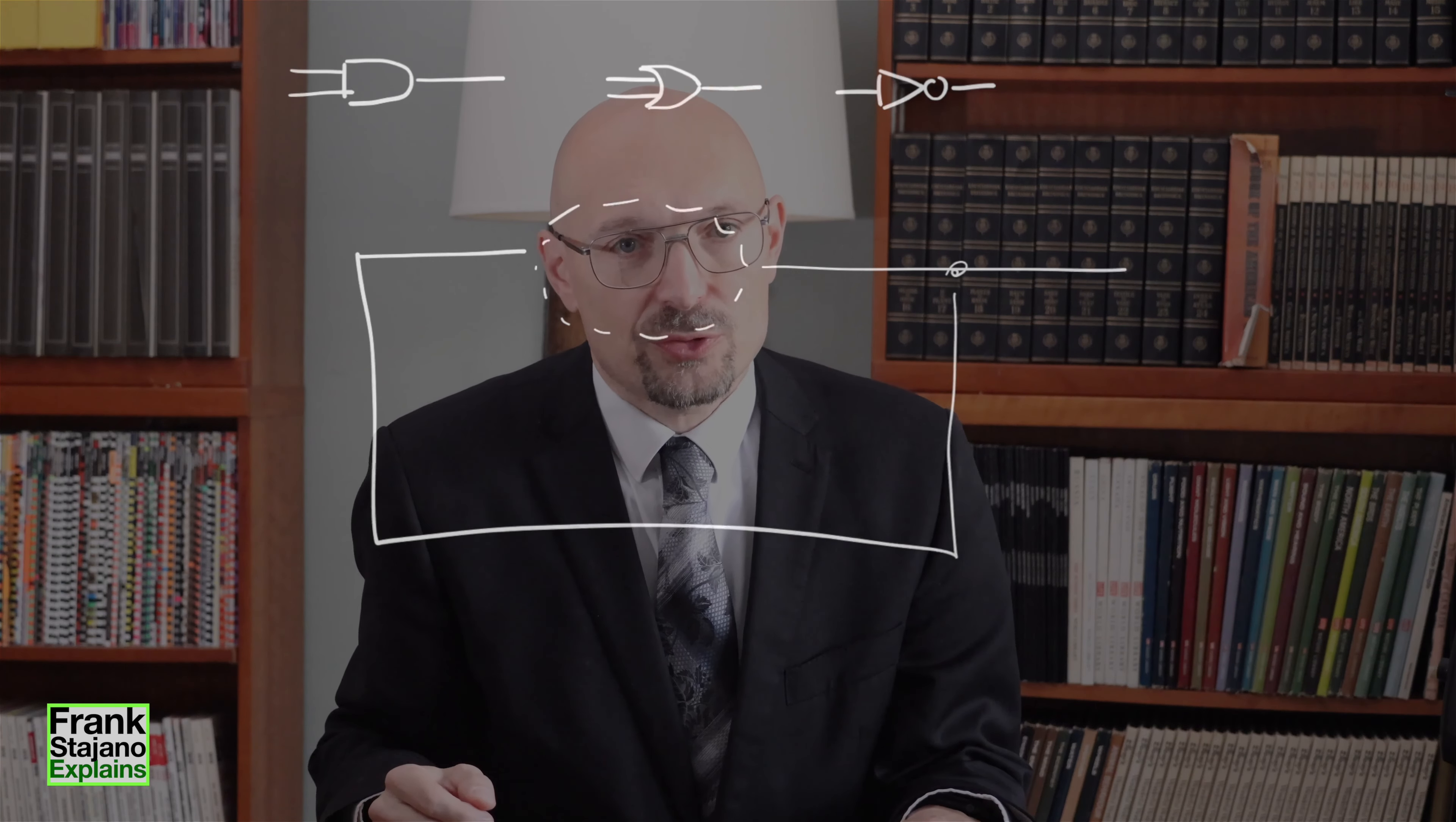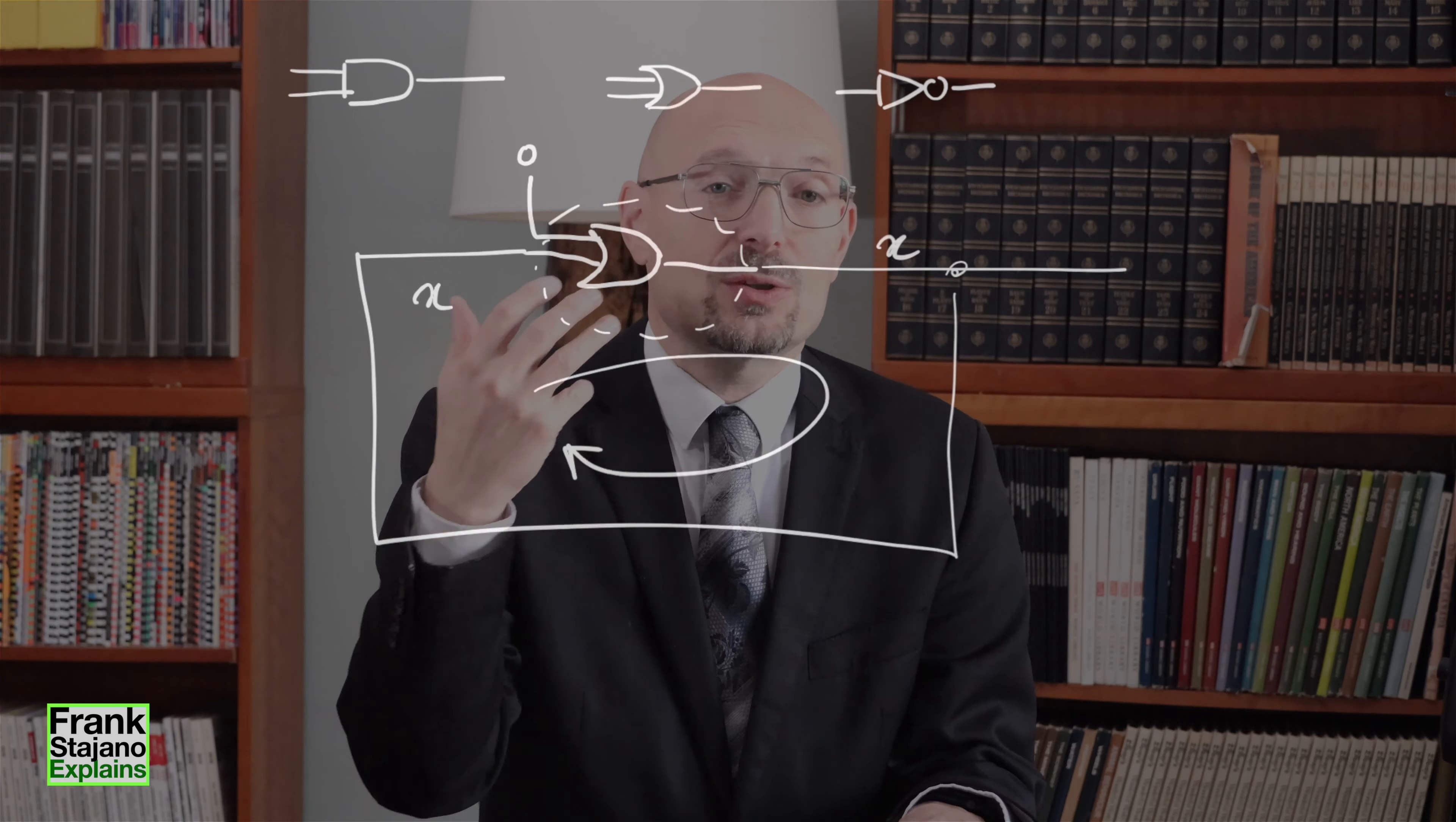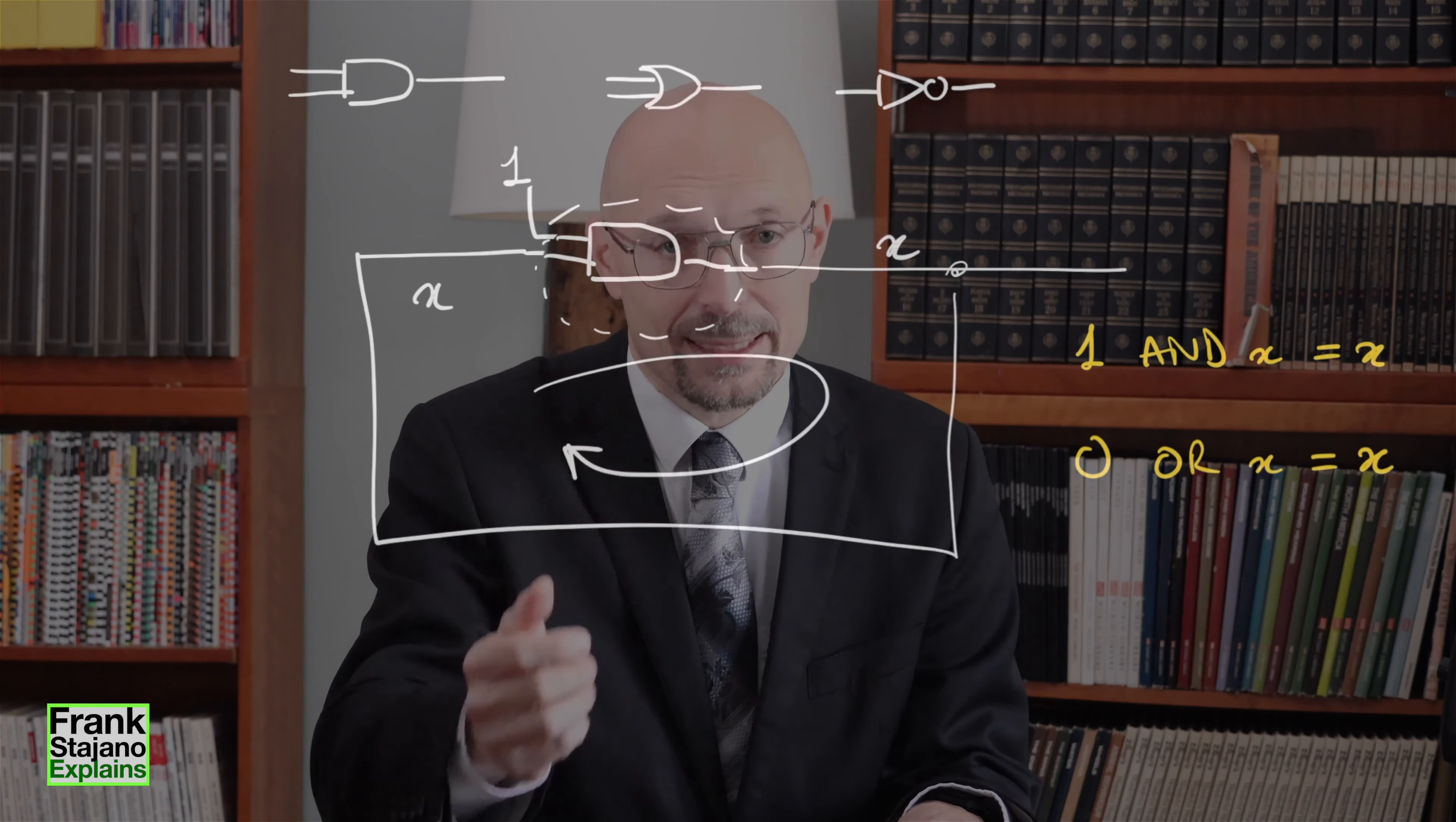I could also use an OR gate where the other input is set to 0, because 0 or 0 is 0 and 0 or 1 is 1. In other words, 0 or anything equals that same thing. So the OR gate with one input at 0 outputs whatever is on the other input, and the other input is the one where I get the loopback from the output. And I could also do the same with an AND gate, this time by setting the other input to 1, because 1 and anything equals that thing. 1 and x equals x.